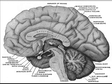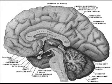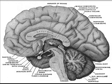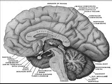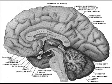The habenula receives input from the brain via the stria medullaris thalami and outputs to many midbrain areas involved in releasing neuromodulators such as dopamine, norepinephrine, and serotonin. The habenula was traditionally divided into lateral (limbic) and medial (motor) parts.